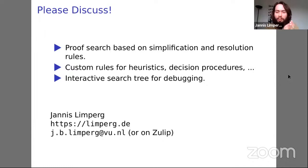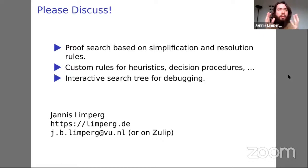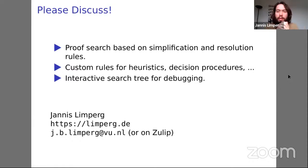Sledgehammer and auto could be made to work together — for example, a combined tactic that runs both, or that calls Sledgehammer if auto is unable to solve a goal. There's certainly potential for cooperation, but whether that actually leads to more goals being proven in practice remains to be seen.